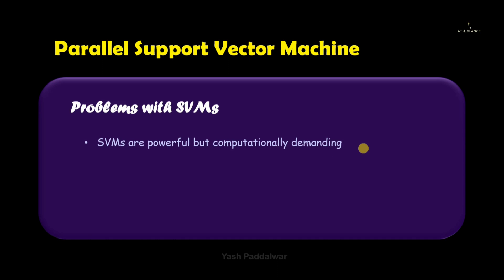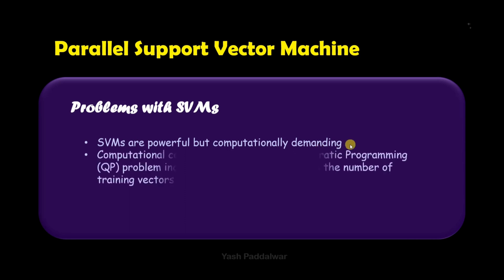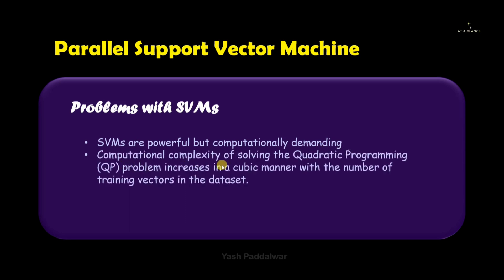It's not just about finding the hyperplane — it's about finding the best hyperplane with the maximum margin distance between both the support vector gutters. As we know, the computational complexity of solving any quadratic programming problem increases in a cubic manner as the number of training vectors in the data set increases.